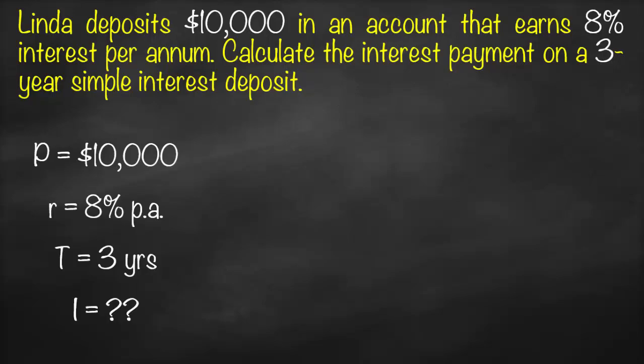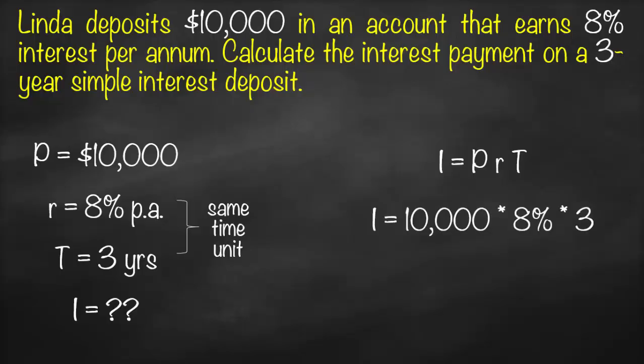Remember that interest rate and time must have the same time unit. Here, interest rate is per annum and time is in years — they match. So we can use our formula directly: I = P × r × t = 10,000 × 8% × 3, which gives us an interest amount of $2,400.